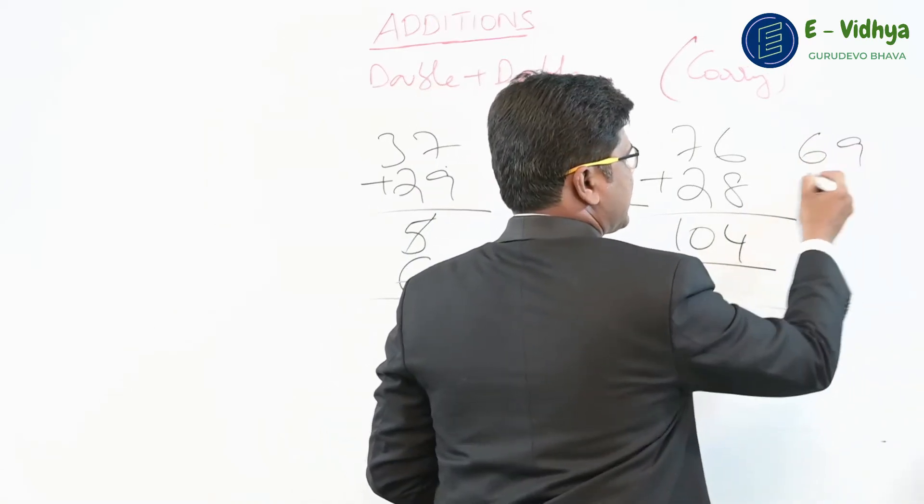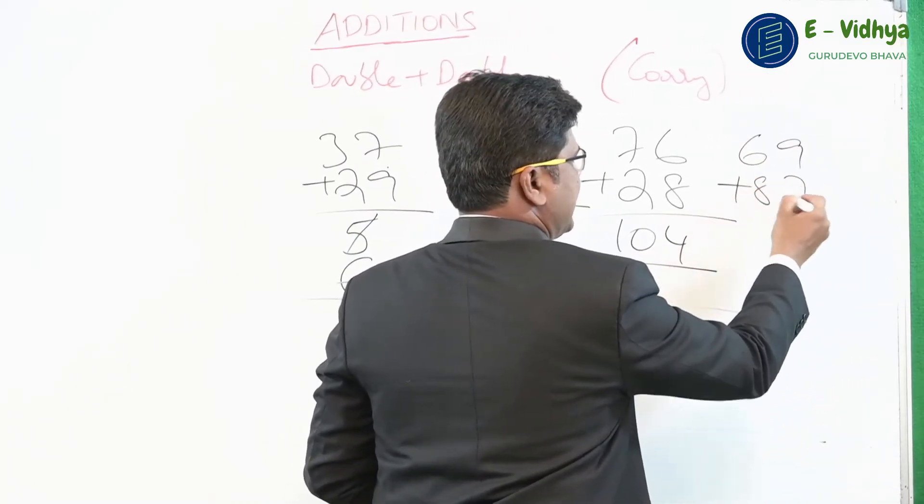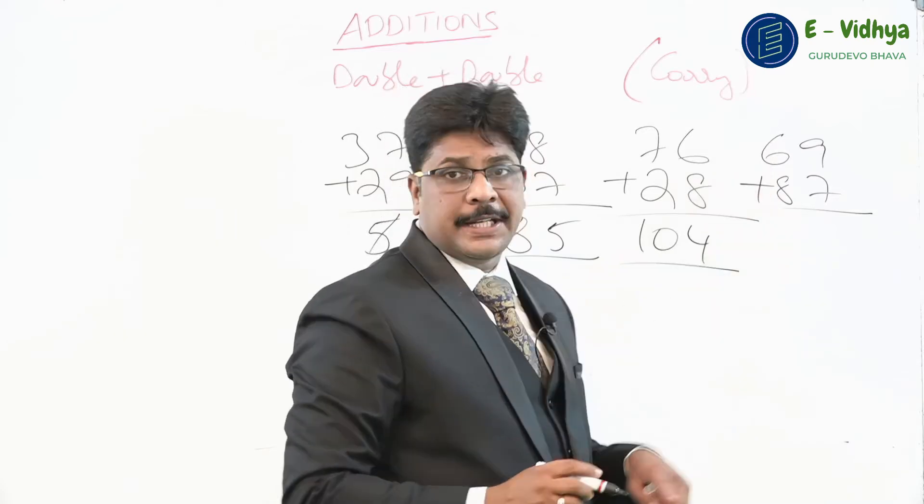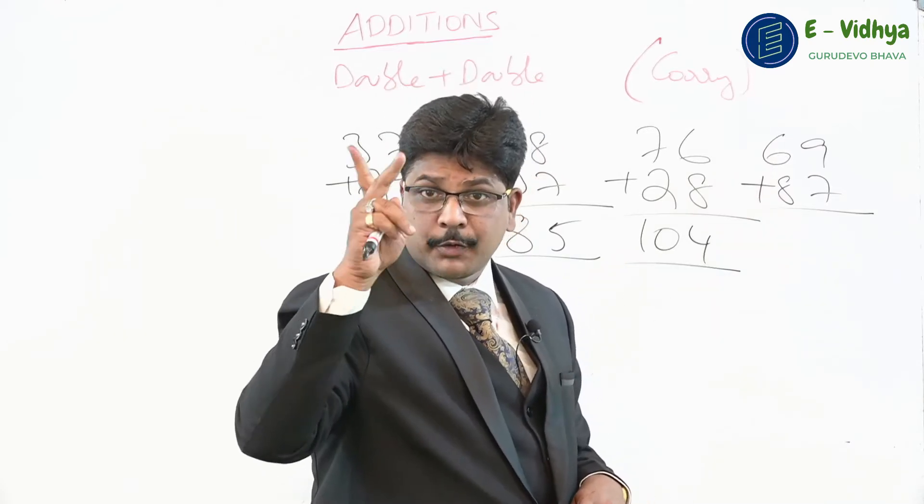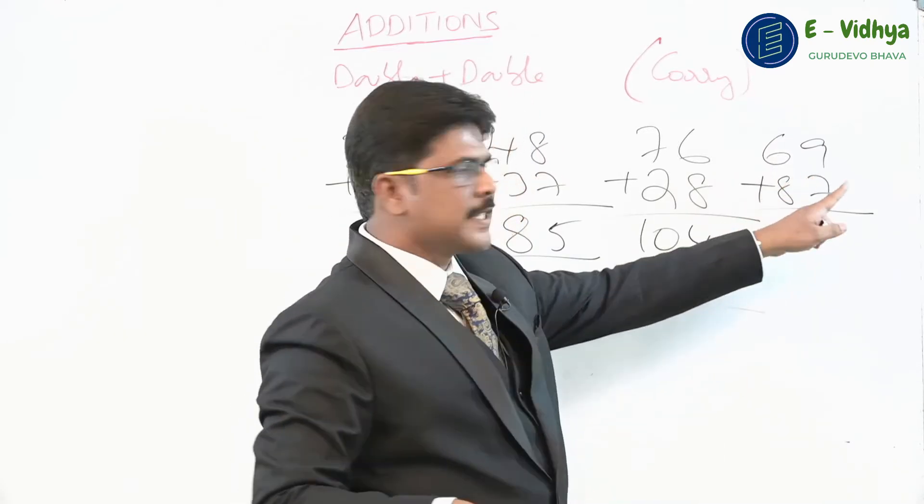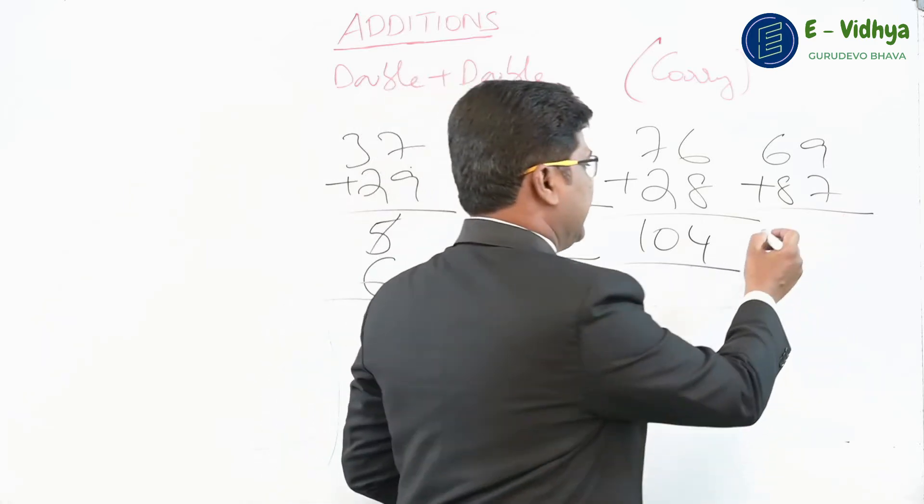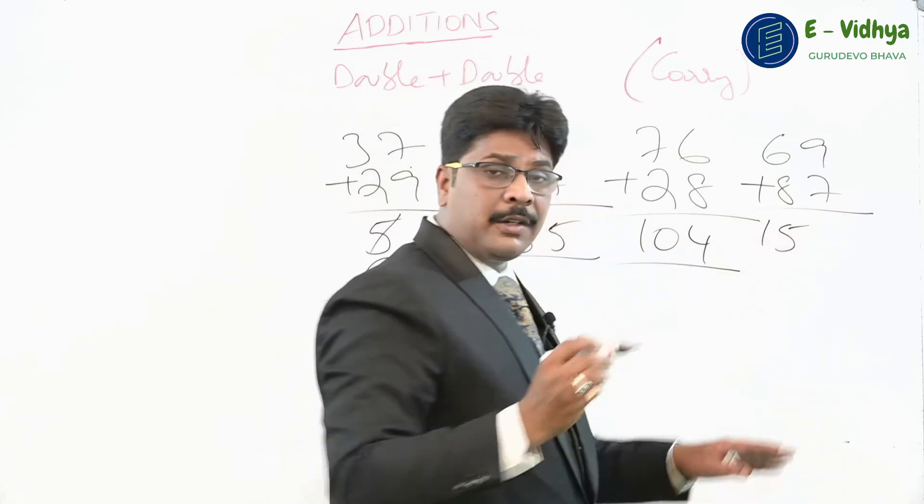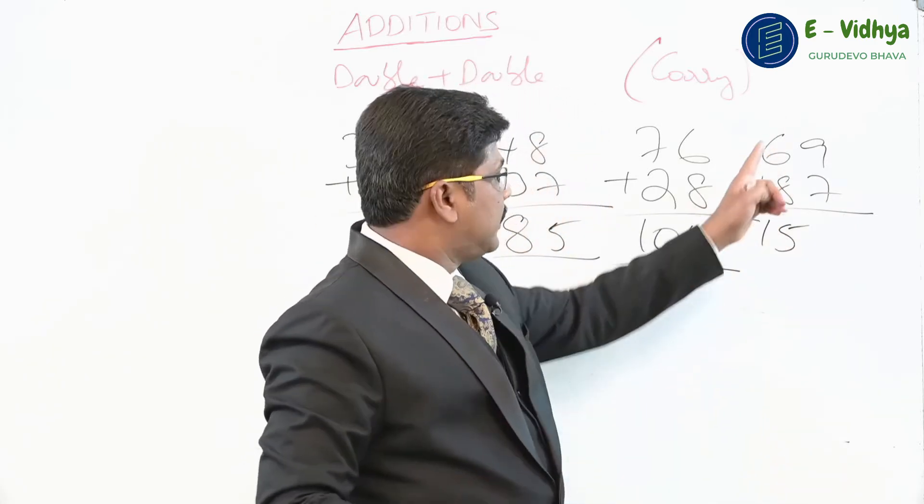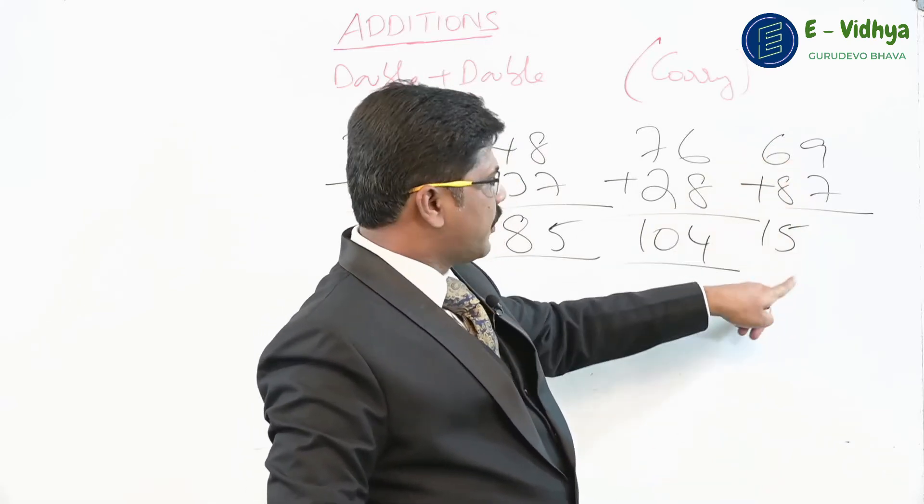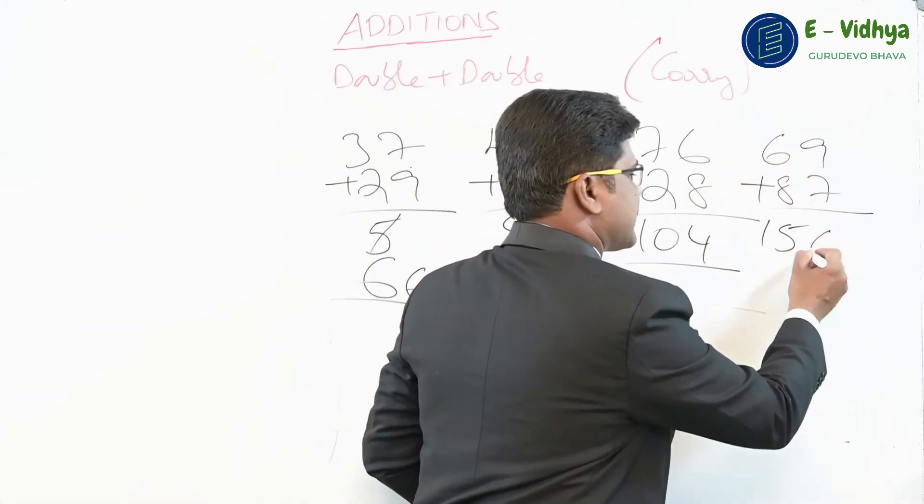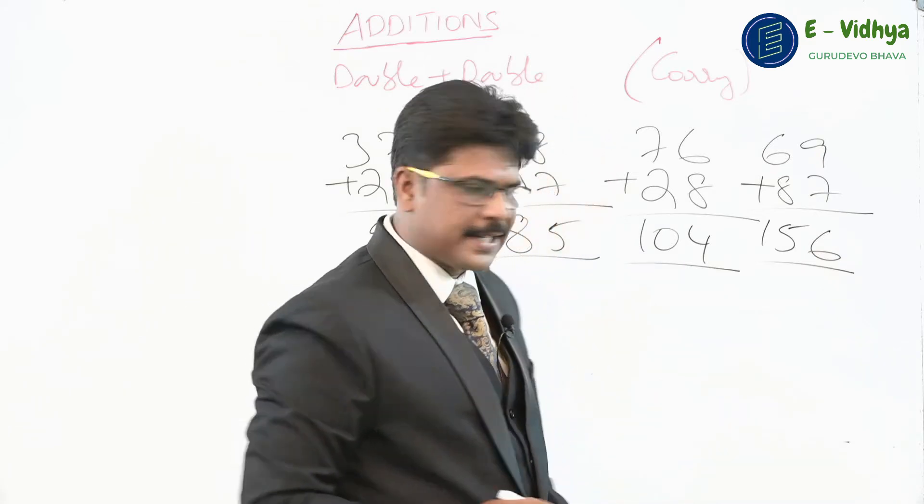Let us take one more example: something like 69 plus 87. Now, add 6 plus 8. You already know the end numbers, right? 6, 8 end number 4, 4 means 14. So next place is a carry. Think one number more, 15. Now, here in the first place, no end number. Think the answer directly. So 14 means 15. Now, end number of 7 and 9 is 6. The answer is 156.